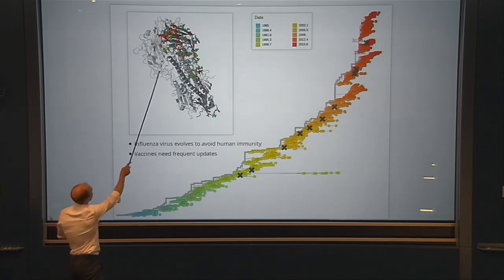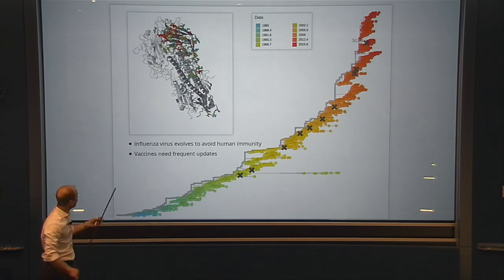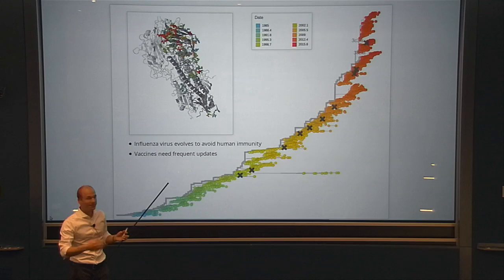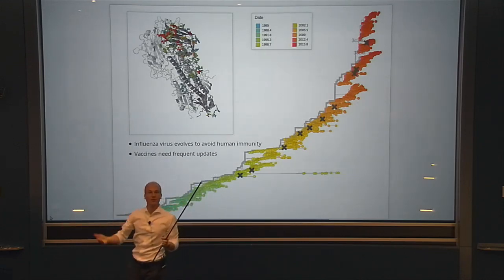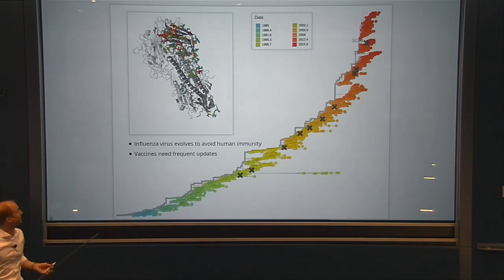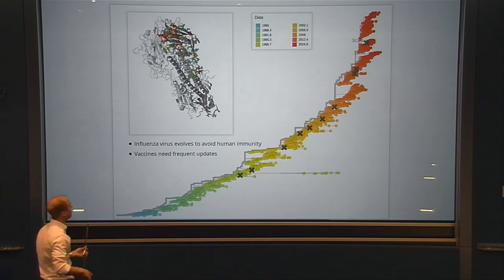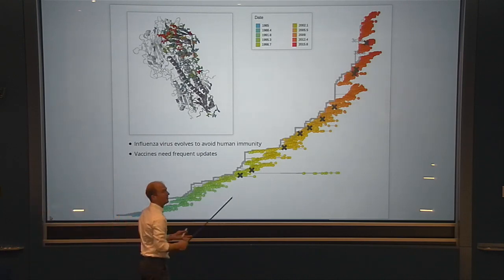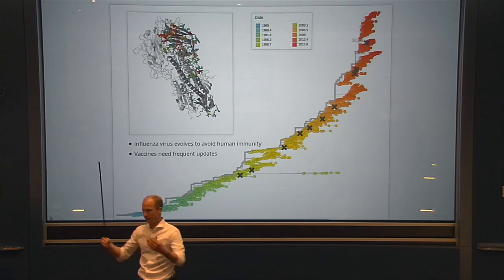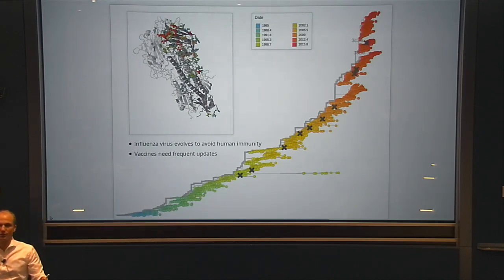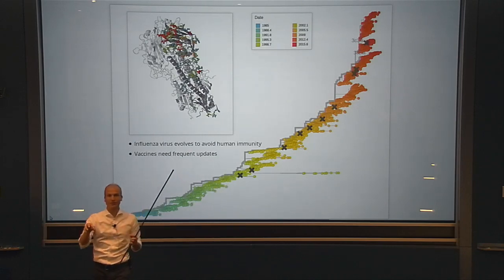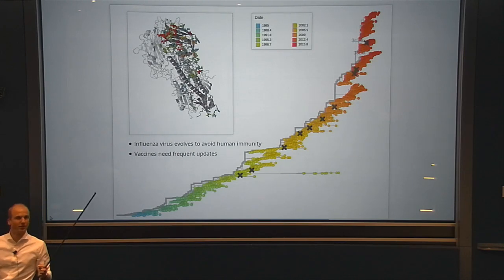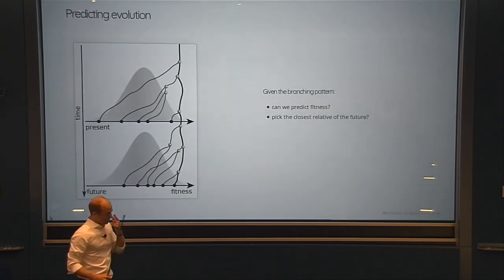Because of this rapid turnover, we need to update vaccines very often. The little crosses correspond to strains used in the influenza vaccine over the last 20 years, and this H3N2 branch is updated every two or three years. If we had a way to anticipate what would circulate in the future, we could make the process of choosing vaccine strains more accurate and potentially a better match for circulating populations.